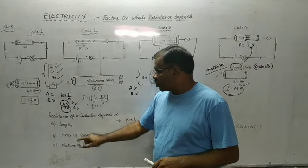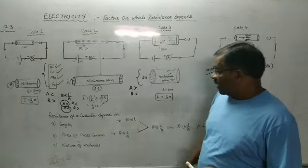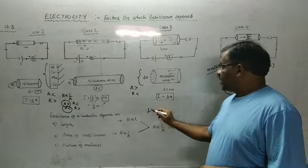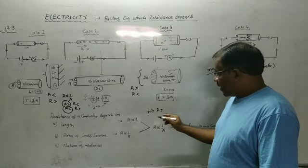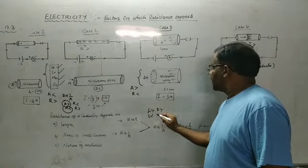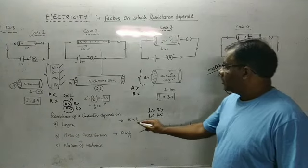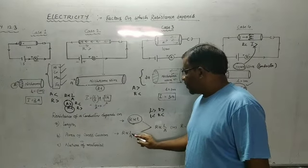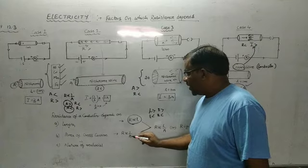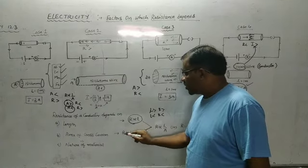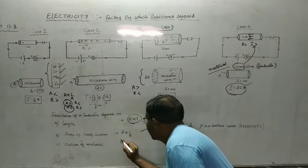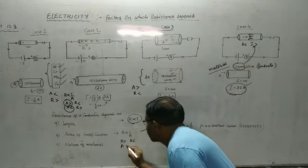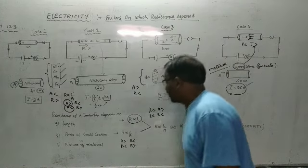The three factors are: number 1, length — resistance is directly proportional to length, so if length increases, resistance increases; if length decreases, resistance decreases. Number 2, area of cross-section — resistance is inversely proportional to area of cross-section, meaning if area increases, resistance decreases. Number 3, nature of the material.